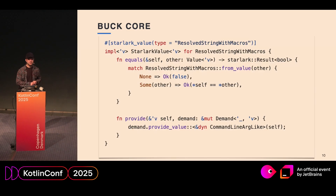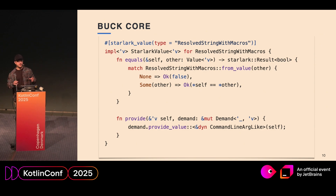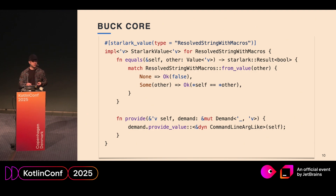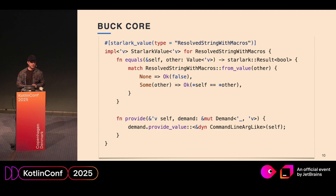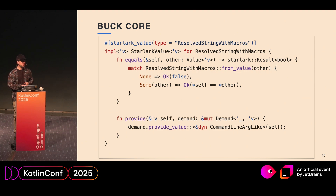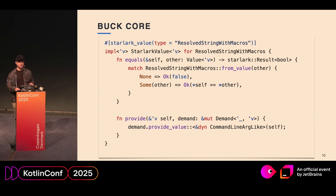But what if you're a build system expert and figure out a way to improve how your build system interacts with file buffers, or you know how to integrate a new shiny virtual file system, or have another idea for parallelizing the build graph? Then you are welcome to Buck2 Core. It's Rust code. It exposes services and APIs to the Skylark layer, and everything language-agnostic can be defined there.